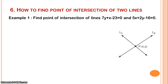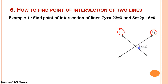Hello students, welcome to tutoring cluster.com. We are discussing different concepts of coordinate geometry. In this video we are going to see how to find the point of intersection of two lines. Suppose L1 and L2 are two lines that intersect at point P. If we are given the equations of L1 and L2, then we can find out the coordinates of point P.